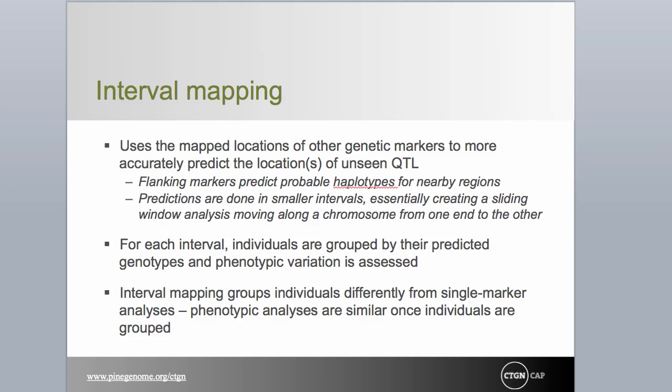Single marker analyses investigate individual markers independently and without reference to their position or order. When markers are placed in genetic map order so that relationships between markers are understood, the additional genetic information provided addresses confounding between QTL effect and location. The interval mapping approach to detection and location of QTL was developed by Lander and Botstein to take advantage of this additional information. Interval mapping addresses the key weaknesses of single marker analyses using ANOVA: inability to accurately detect and locate a QTL, inability to accurately estimate the QTL effect due to recombination, and inability to evaluate individuals for which genotype data may be missing.